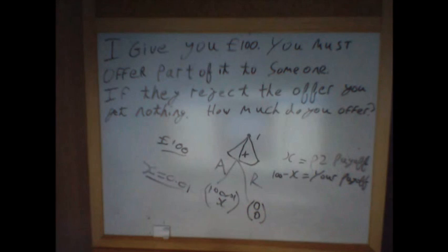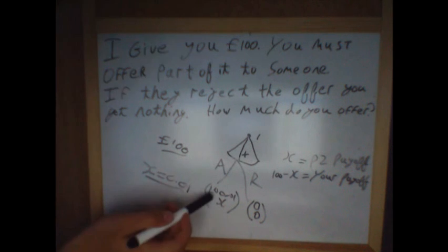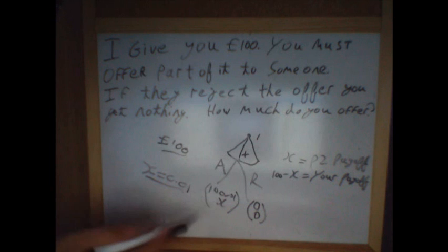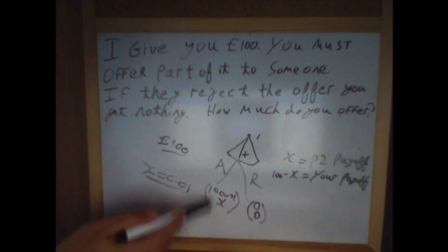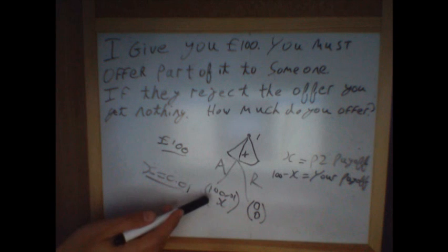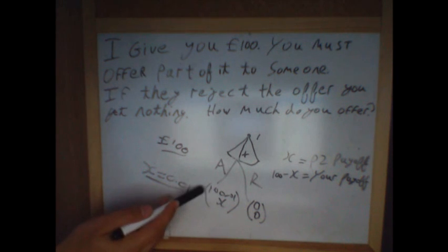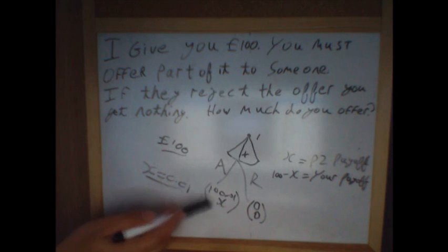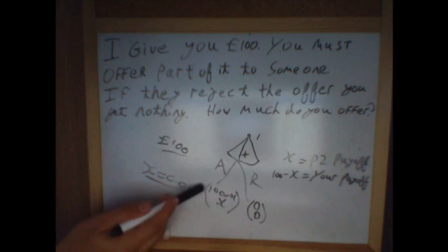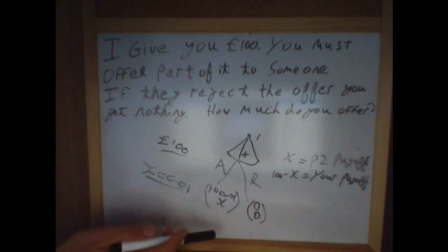For example, they may care about the division — the share — this difference between 100 minus x and x. They actually care about the difference, and they might be what's called inequity averse: equity conscious. They care about how much they get relative to you, and if they perceive the share to be unfair, they will reject it.